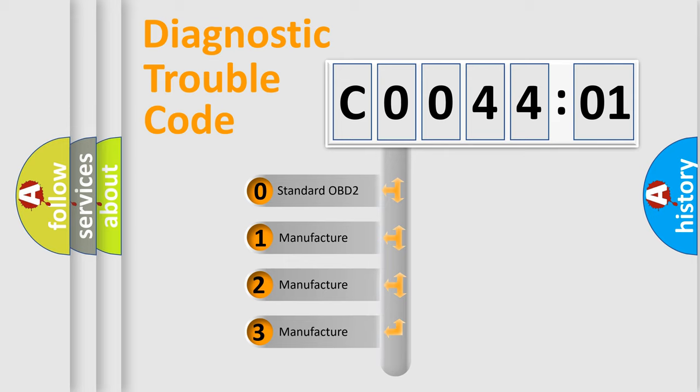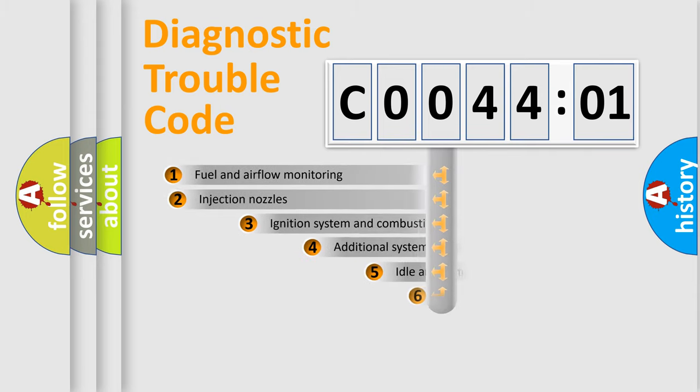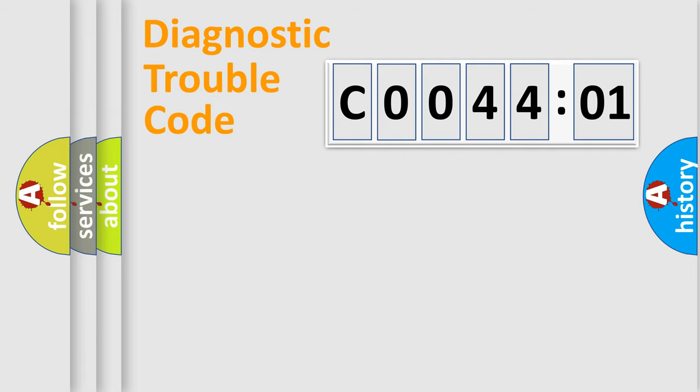If the second character is expressed as zero, it is a standardized error. In the case of numbers 1, 2, or 3, it is a more prestigious expression of the car-specific error. The third character specifies a subset of errors. The distribution shown is valid only for the standardized DTC code. Only the last two characters define the specific fault of the group.